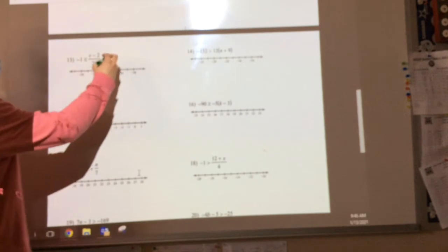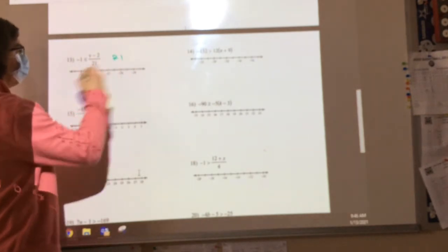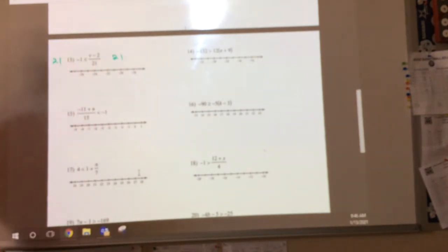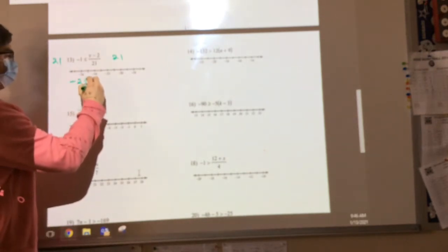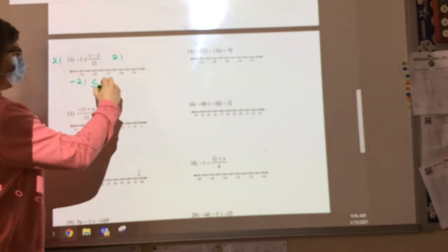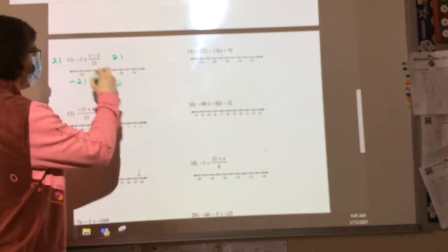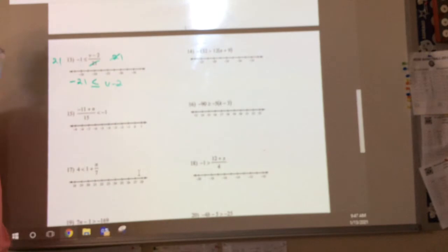Yeah, multiply both sides by the denominator. So I'm going to multiply this side by 21 and this side by 21. Are we all okay with that? So here's what I'm going to end up with. Negative 21 is less than or equal to V minus 2 because these 21s cancel each other out. Is everybody cool with that first step?